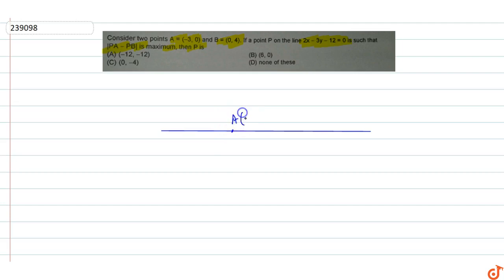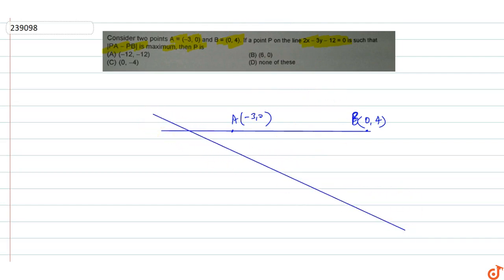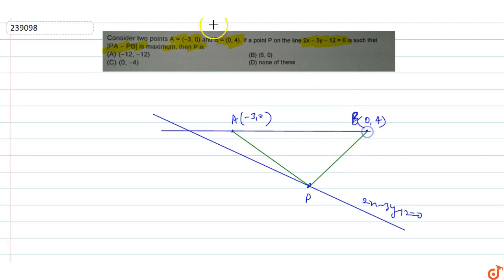This is the line on which we work. Point A is minus three comma zero and point B is zero comma four. We need to find point P which lies on the line 2x minus 3y minus 12 equal to zero, such that the distance PA minus PB is maximum.